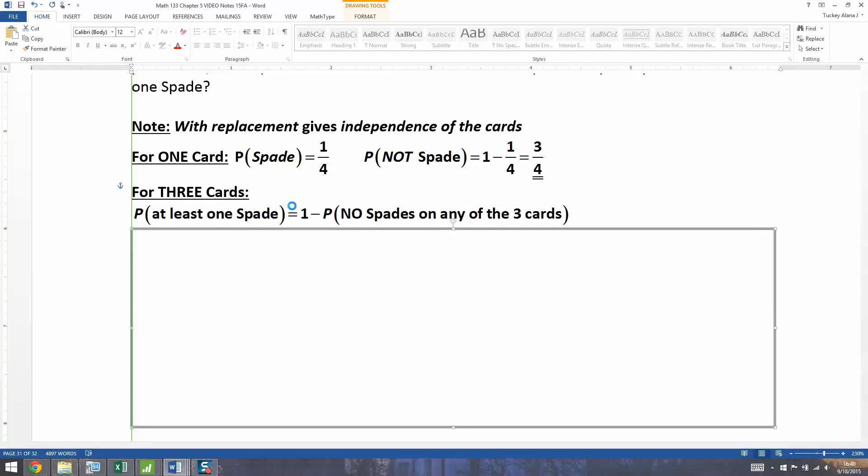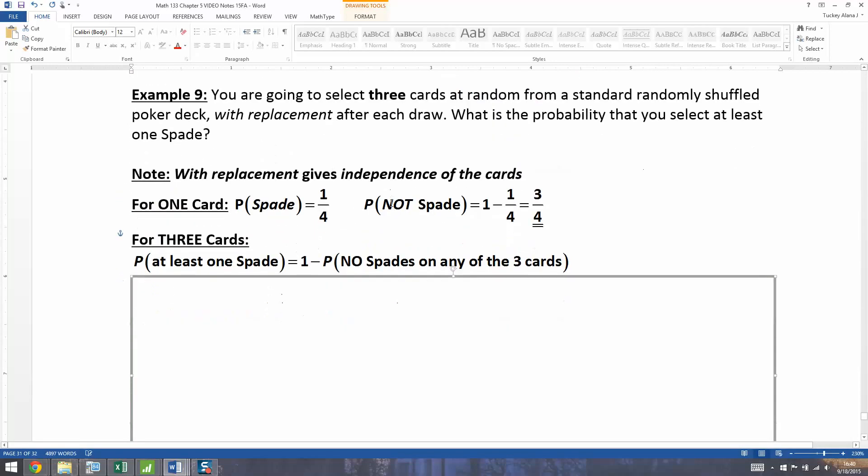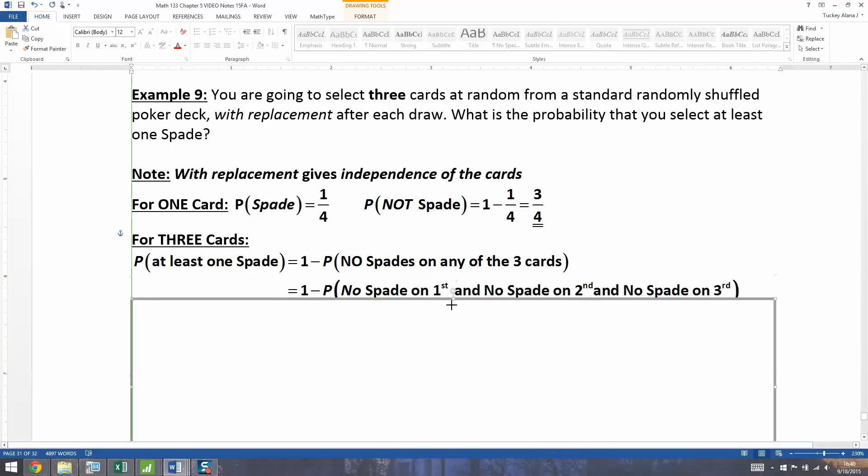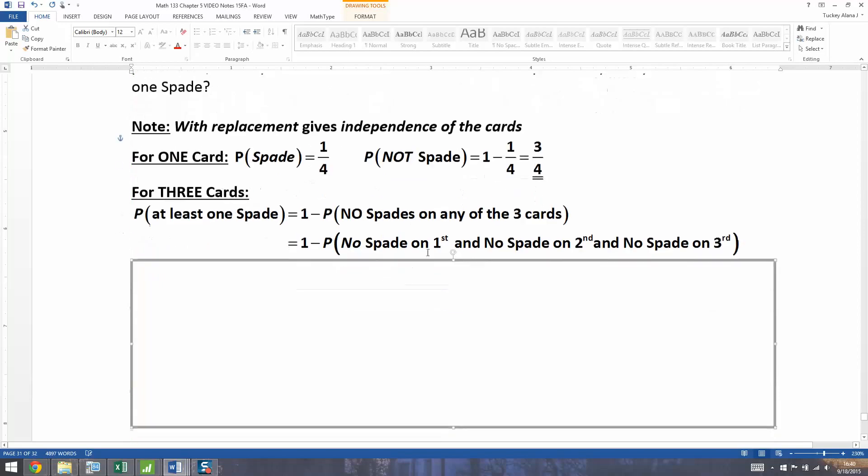So with three cards, it gets a little more complicated. We want the probability that at least one spade is drawn. So what we're going to do is we're going to take the probability of no spades on any of the cards. No spade on the first, no spade on the second, no spade on the third. And we're going to take that away from one. So let me write that down. So I want no spade on the first, no spade on the second, and no spade on the third. Now it doesn't say and, but it has to be an and because you have three cards. Once you're dealing with multiples, it has to be the multiplication rule.